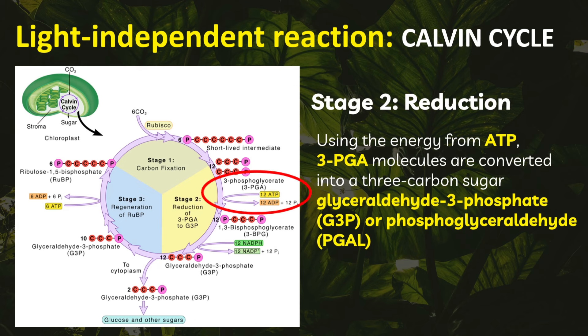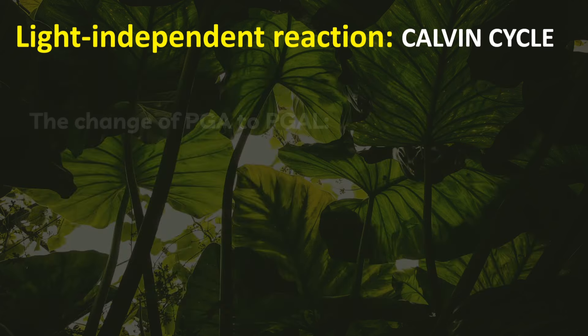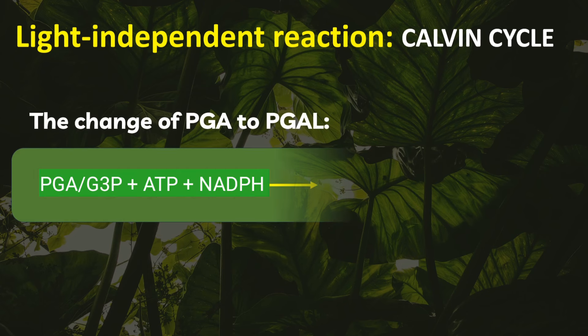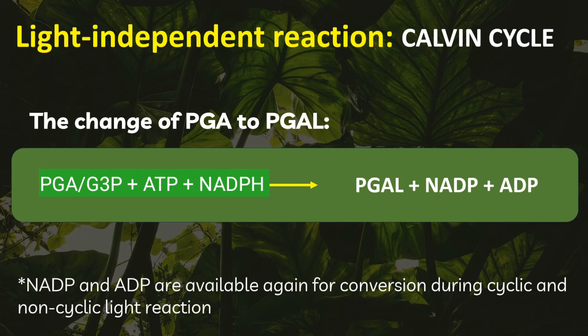For stage two, the reduction phase: using the energy from ATP, 3-PGA molecules are converted into a three-carbon sugar, glyceraldehyde 3-phosphate, also known as G3P or PGAL. This stage involves the enzyme glyceraldehyde 3-phosphate dehydrogenase, in which NADPH from the light reaction acts as an electron donor. Summary of the change: 3-PGA plus ATP plus NADPH becomes PGAL plus NADP+ plus ADP.